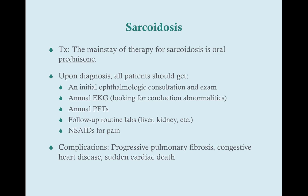Patients need to get an annual EKG, primarily looking for conduction abnormalities — namely left and right bundle branch block. They're also going to need annual pulmonary function tests and possibly annual chest x-rays to monitor any decline in lung function, plus follow-up routine labs looking at liver enzymes, kidneys, and so forth. NSAIDs can be used as needed for pain. The complications of sarcoidosis are progressive pulmonary fibrosis, congestive heart disease due to cor pulmonale from fibrosis, and sudden cardiac death from sarcoid granulomas forming on the heart causing conduction abnormalities and ventricular fibrillation — which is why we get the annual EKGs.